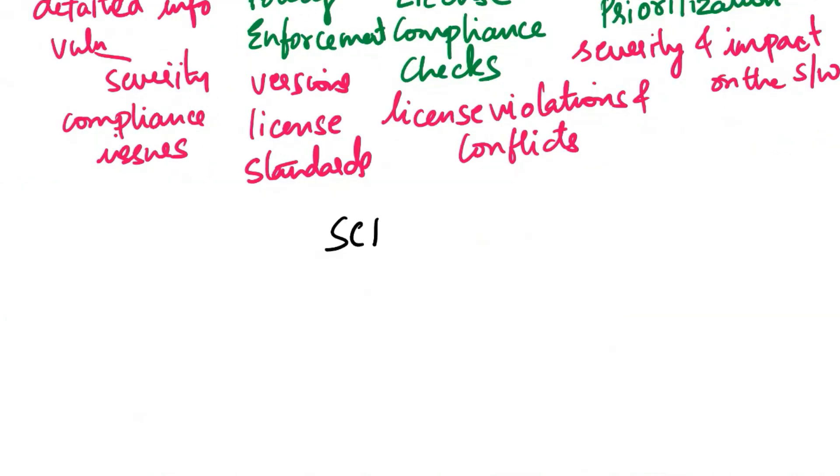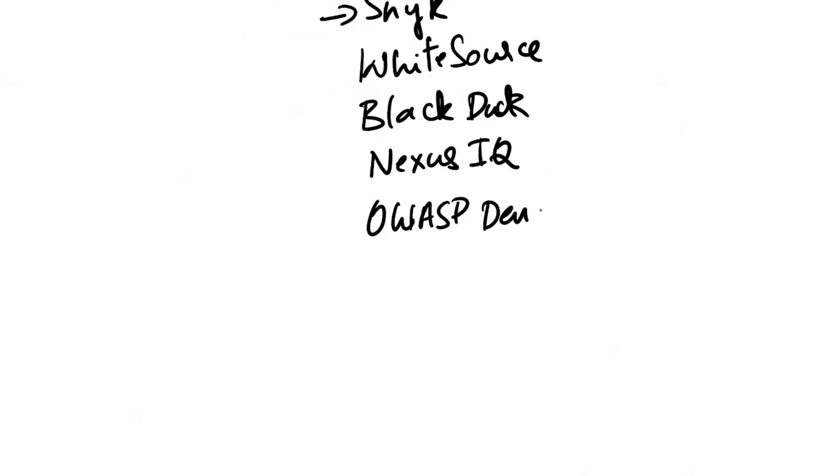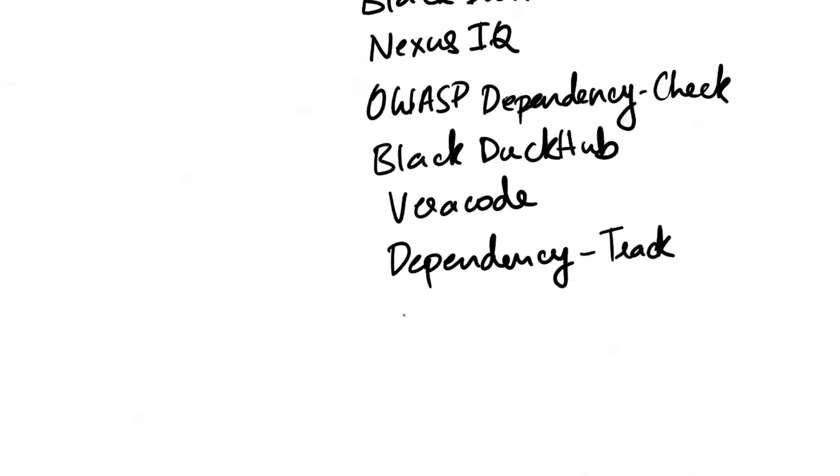Now let's see some of the popular SCA tools and platforms. There is Snyk, WhiteSource, BlackDuck by Synopsys, now called Detect. Next is IQ by Sonatype, OWASP Dependency Check, BlackDuck Hub, formerly called HubDetect. Then there is Veracode, Dependency Track, SonarQube and Node Security Platform NSP.